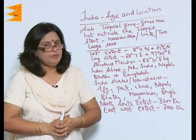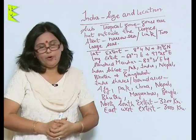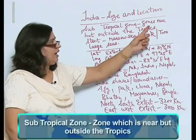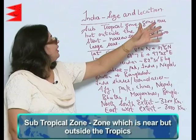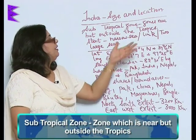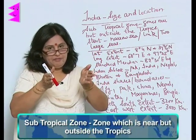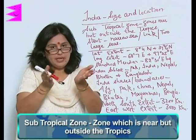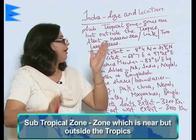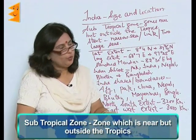Continuing with the new terms and concepts, the next one is subtropical zone. It is that zone which is near but outside the tropics — it does not fall in the tropics but is near it. Those zones are called subtropical zones.